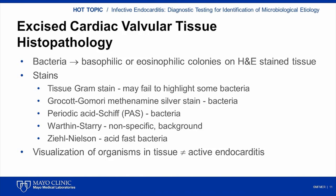Although Warthin-Starry stains may be used to identify weakly staining bacteria such as Bartonella species, staining is nonspecific, and heavy background precipitate often renders this stain difficult to interpret. A Ziehl-Neelsen stain may be used for the detection of acid-fast bacteria such as mycobacteria, but these are rare causes of endocarditis. Caution should be exercised when interpreting staining properties of organisms in valves removed from patients on antimicrobial therapy, as bacterial morphologies and stain properties may be altered. Additionally, the presence of organisms in tissue does not necessarily indicate active endocarditis, as clearance of organisms is delayed compared to sterilization of vegetations. Consultation with a pathologist with specialized expertise in infectious diseases pathology is recommended.